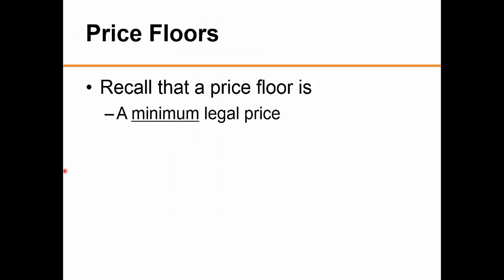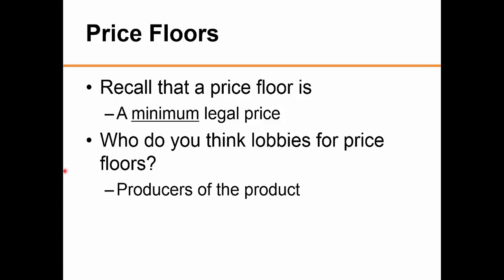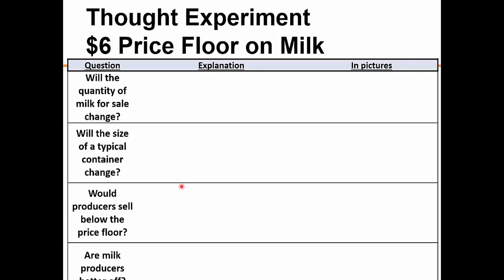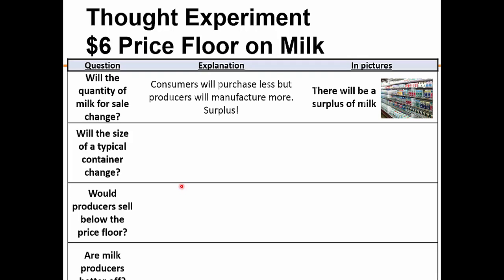Recall that a price floor is a minimum legal price. Often, producers like farmers and those who benefit from minimum price legislation tend to lobby for this legislation to be in place. As a thought experiment, what if a price floor of $6 is placed on a gallon of milk? You cannot charge below $6 for a gallon of milk. What will happen? Consumers will purchase less, but producers will be willing to manufacture more. This will result in a surplus of milk, with stacks of milk on the shelves.